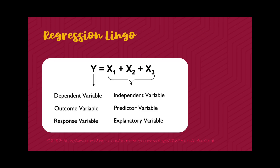The dependent variable may also be called the outcome variable or response variable — I interchange dependent variable and outcome variable. The independent variable in regression can also be called predictors or explanatory variables — especially in logistic models. I may use independent variable and predictor variable interchangeably.